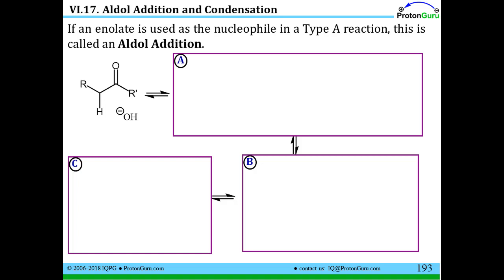The point of this is to use an enolate as the nucleophile to attack another ketone or aldehyde. The initial nucleophilic attack of an enolate on a ketone or aldehyde is going to be a Type A reaction. If we use it only that far, we're going to call it an aldol addition.